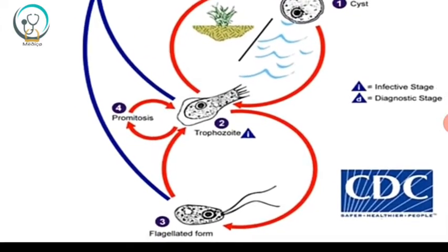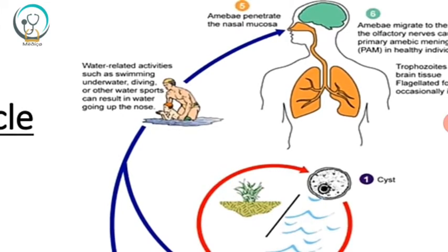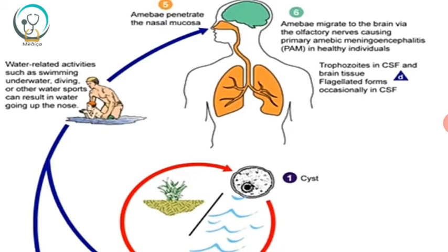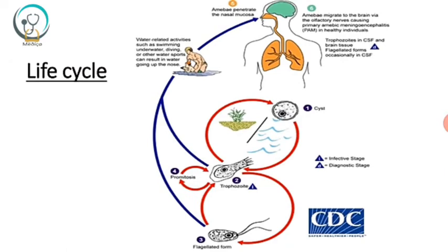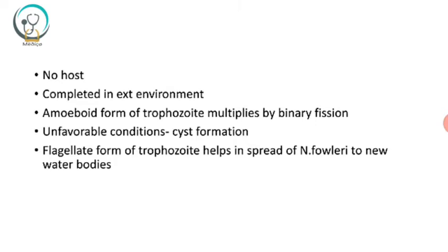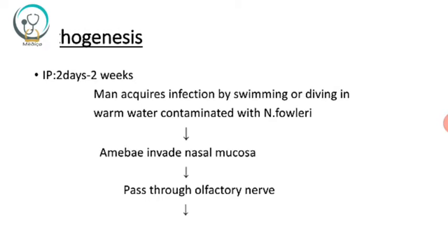The life cycle includes three forms: cyst, trophozoite, and flagellate. The amoeba enters the human body during swimming or diving, penetrates the nasal mucosa, and through the olfactory nerve reaches the brain, causing PAM. No host is required — the life cycle is completed in the external environment. The amoeboid trophozoite multiplies by binary fission; under unfavorable conditions it forms cysts; and the flagellate trophozoite helps spread Naegleria fowleri to new water bodies.